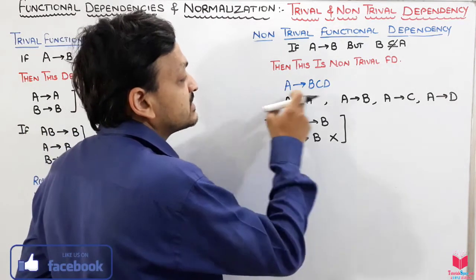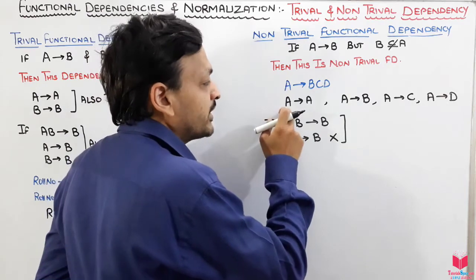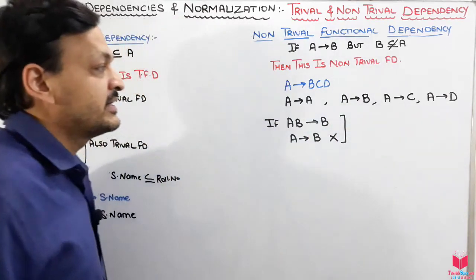Like if we have given that this dependency B, C, D is functionally dependent on A, we can write from A to A, A to B, A to C, and A to D. We can find that this is a trivial.